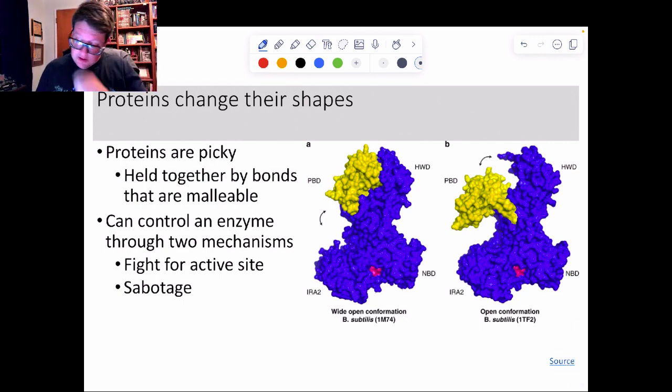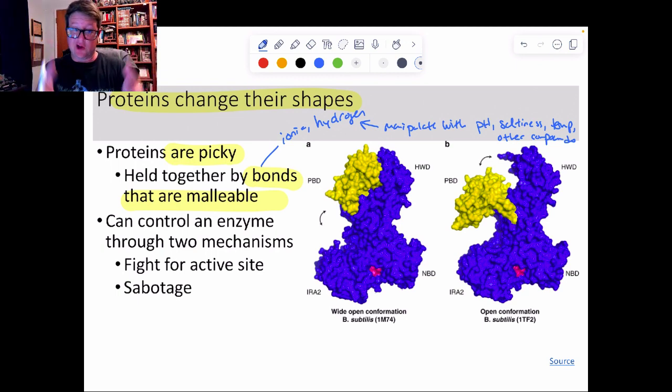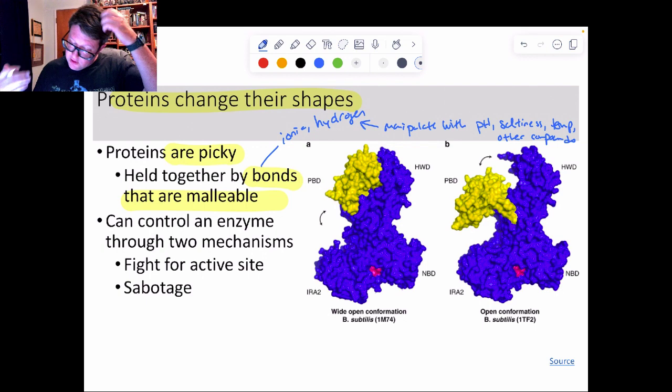Remember from previous topics that proteins are insanely picky when it comes to their shape. They are picky because the bonds that hold them together are malleable, meaning I can change them. Those bonds, of course being ionic and hydrogen, are the two big ones that we can change. Covalent you can't really change. Hydrophobic you can't really change. But these two here I can manipulate with pH, saltiness, with temperature, and we can also mess with it in terms of other compounds. Like we saw with the induced fit model, bringing the substrate close is enough to change the shape.